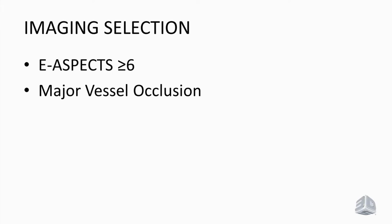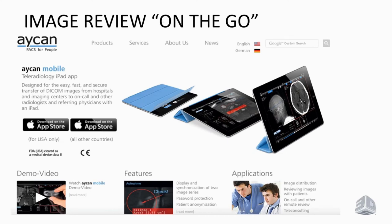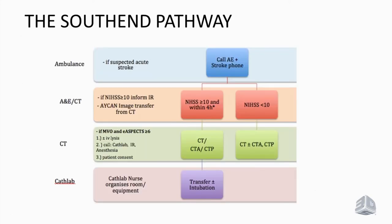When not in the hospital, we transfer images directly from the CT scanner to our iPad. Even if we are somewhere else, the whole stroke team gets an alert that there is an acute case. The pathway is: if the ambulance team suspects a stroke, the stroke team and A&E are called. If the NIHSS is 10 or above or the patient is aphasic, the interventional radiologist is also informed. If there is a major vessel occlusion and the ASPECTS score is 6 or above, this triggers the pathway for interventional treatment, with notification of the anesthesiologist and cath lab.